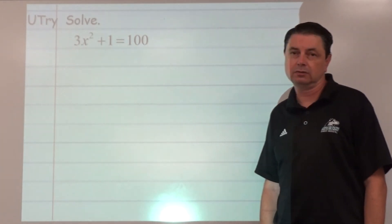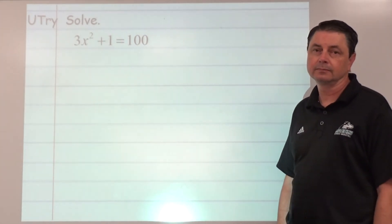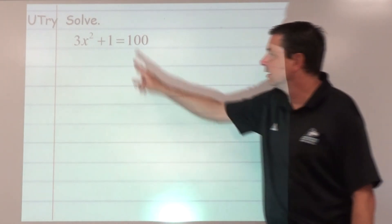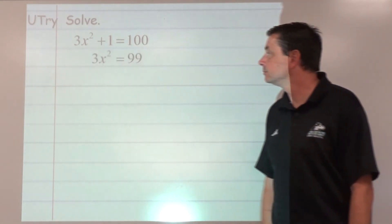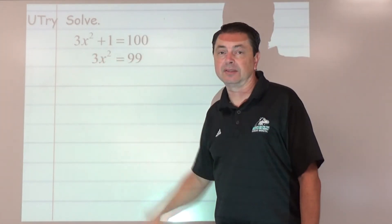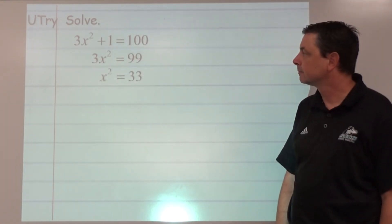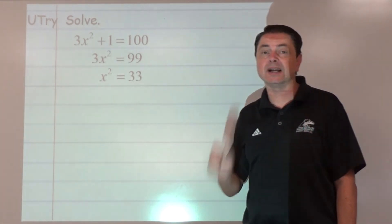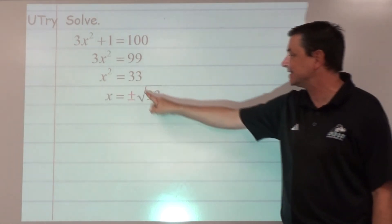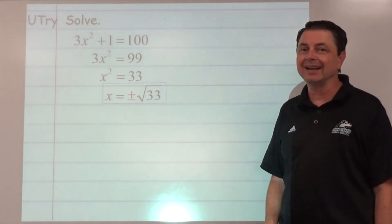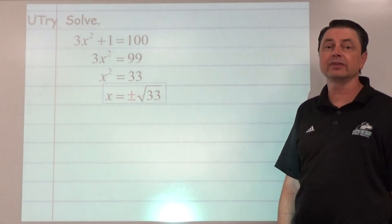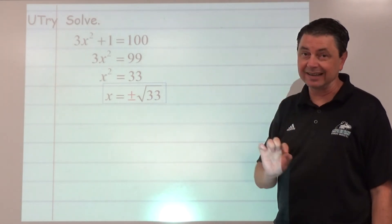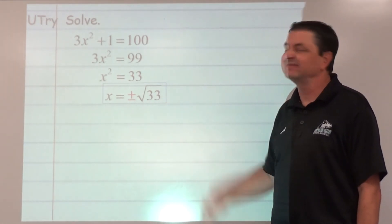In the next solve, we isolate: get rid of the plus 1, then get rid of the 3 by dividing both sides. Now get rid of the exponent by taking the square root of both sides — remember plus or minus. Since 33 does not have any perfect square factors besides 1, which doesn't help, it does not change. That's our final answer: x equals plus or minus the square root of 33.